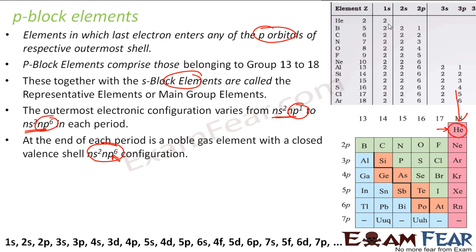Helium is the exception, but apart from helium, if you see my boron, the last electron goes to a p-orbital; carbon, p-orbital — all these elements have their last electron going into a p-orbital.